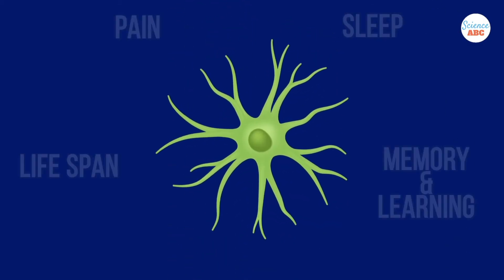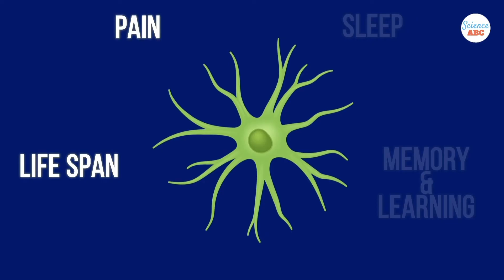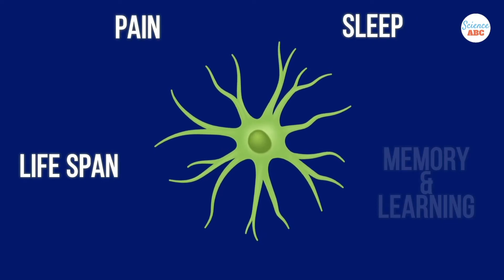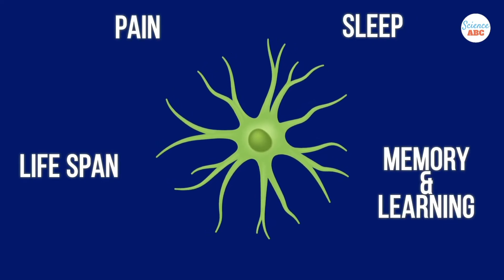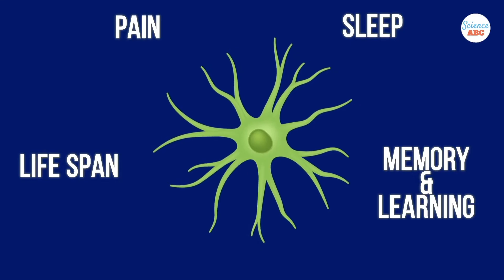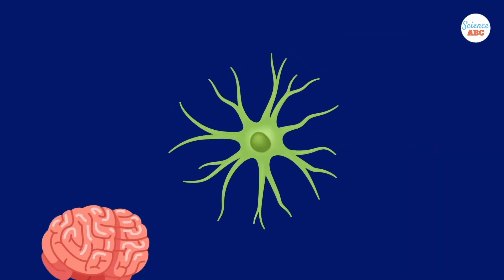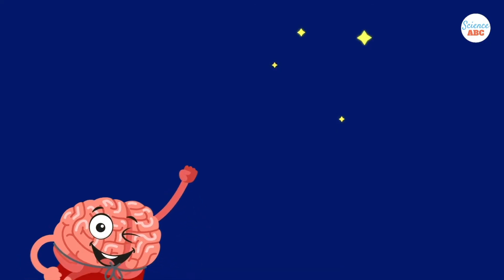It seems that glia might control lifespan, play a part in how we feel pain, affect how we sleep, determine how we form memories and learn, and explain a variety of other behaviors too. So, what exactly do glial cells do in the brain, and why are we only just realizing how cool they are now?